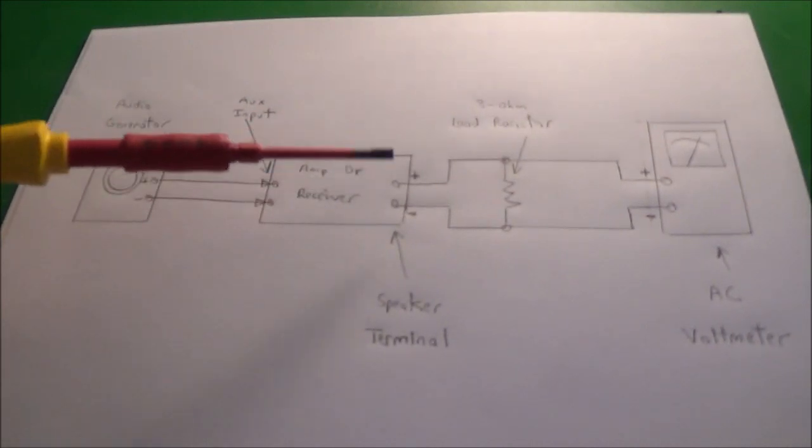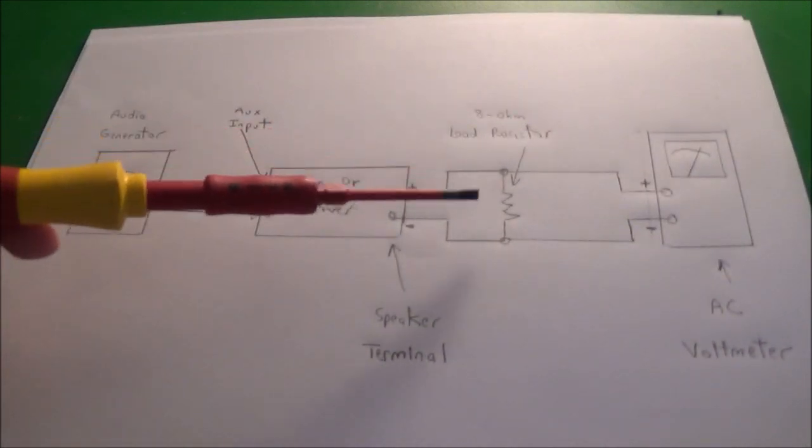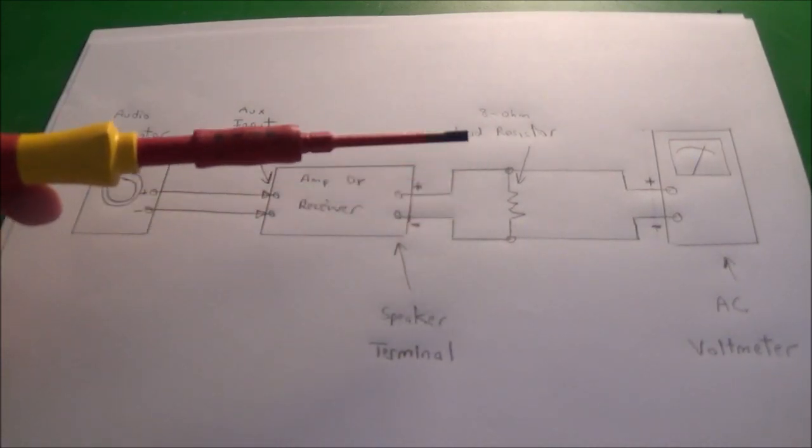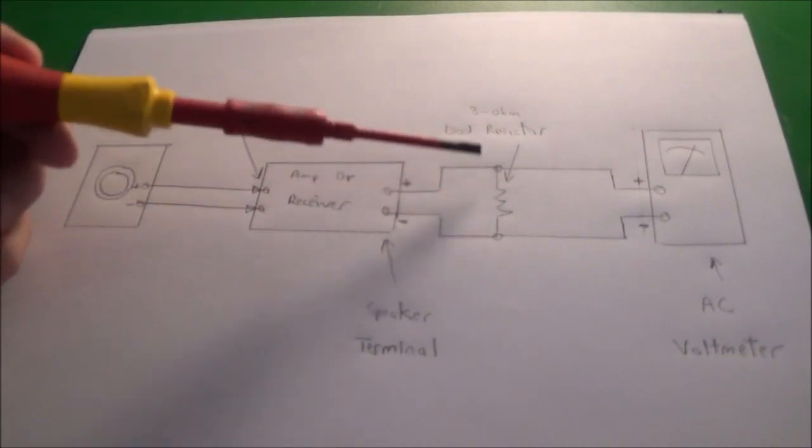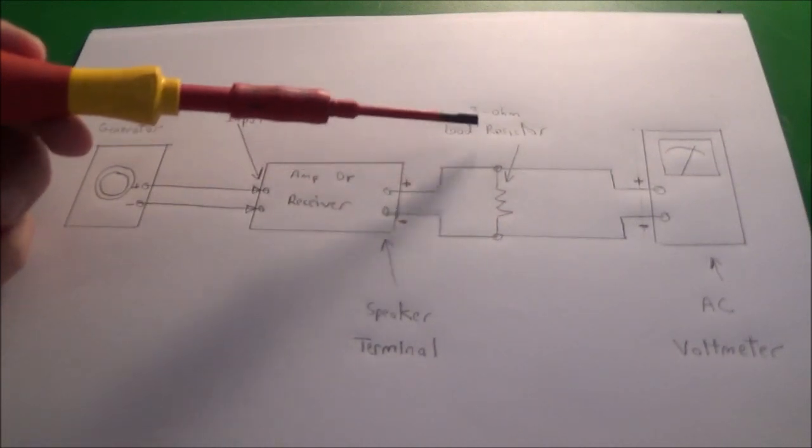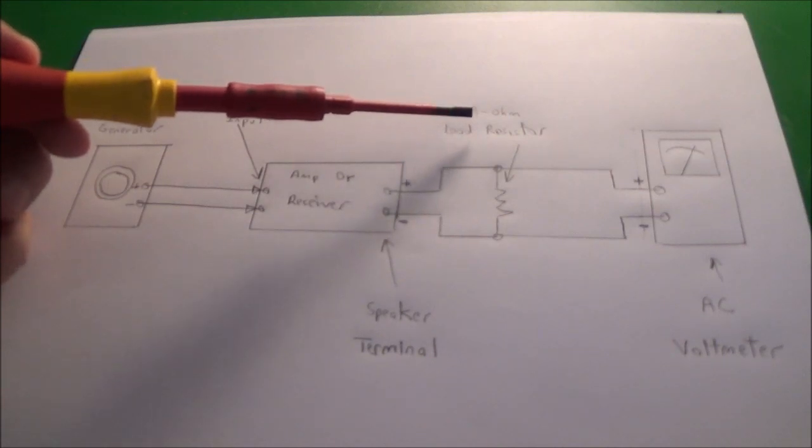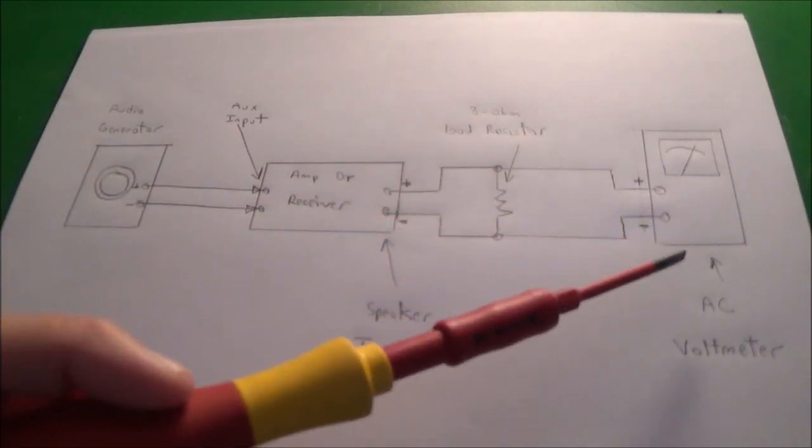In my little sketch here, here's the speaker terminals and right over here is the eight ohm load resistor. If your amplifier was, for example, four ohms you'd have to use a four ohm resistor. I'm going to be testing at an output of one watt, so you don't really have to use a high power resistor. And here's the AC voltmeter.